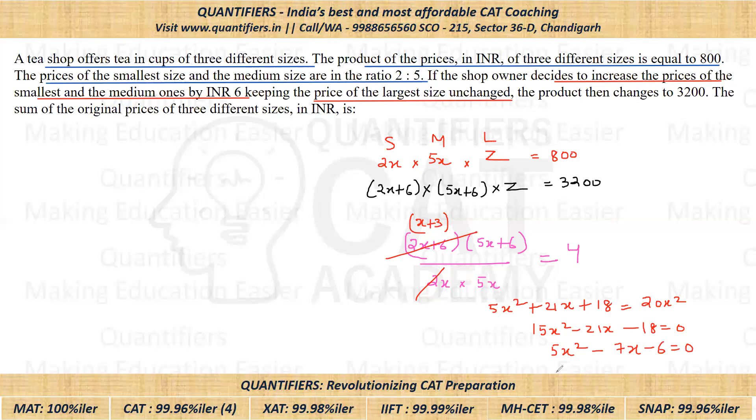Now very easy quadratic. I hope all of you can easily solve it. Now students, here you will get one positive value and one negative value. And obviously we have to ignore the negative value because the prices cannot be negative. So positive value that would be satisfied is x equals 2.